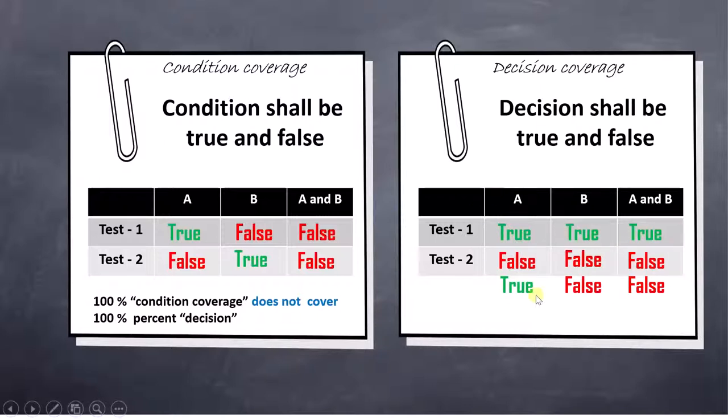But if I see the condition coverage, A is only true, A never becomes false. So that is the reason we have not covered 100% condition coverage. For B we have covered, because this is true here and this is false here.